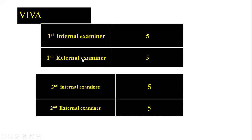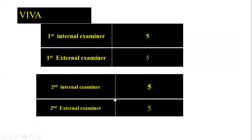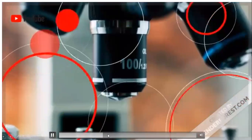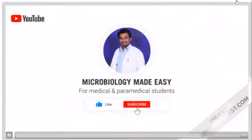For the viva, there are two internal examiners (5 marks each = 10 marks) and two external examiners (5 marks each = 10 marks), making the total viva marks 20. Thank you — please subscribe to Microbiology Made Easy. In the next video, I will cover further details on the remaining practicals.